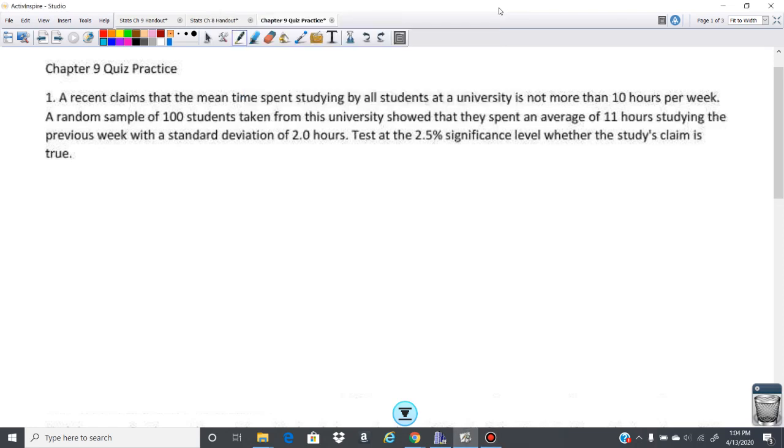All right, let's do some quiz practice here. A recent study claims that the mean time spent studying by all students at a university is not more than 10 hours per week. A random sample of 100 students taken from this university showed that they spent an average of 11 hours studying the previous week with a standard deviation of 2 hours. Test at the 2.5% significance level whether the study's claim is true. So let's look at what we are given here first.